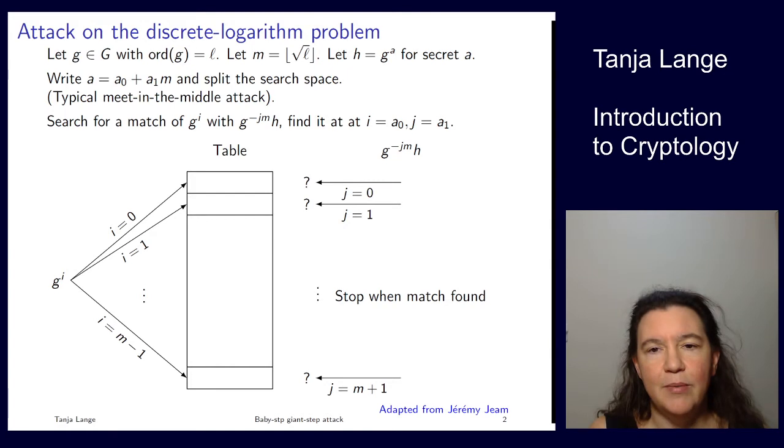So we have now seen the Diffie-Hellman key exchange and ElGamal encryption signature systems, and we know that if you can compute Alice's private key from her public key, all of these schemes are broken. That problem is the discrete logarithm problem, getting lowercase a from Alice's public key g to the a.